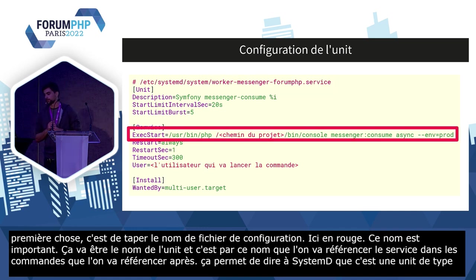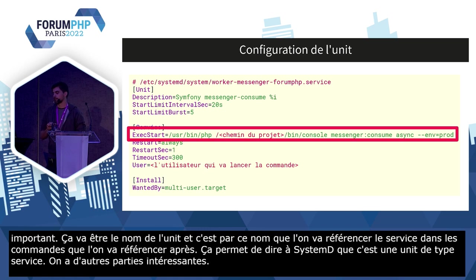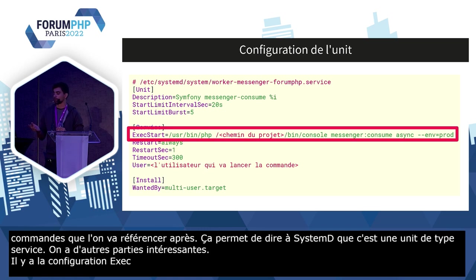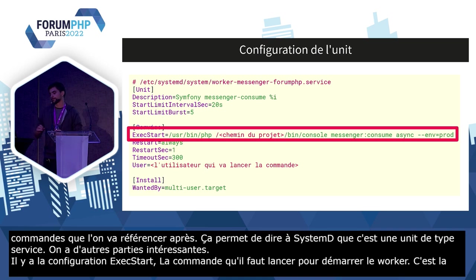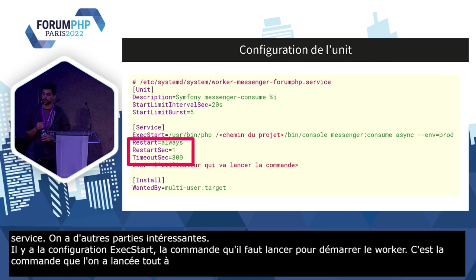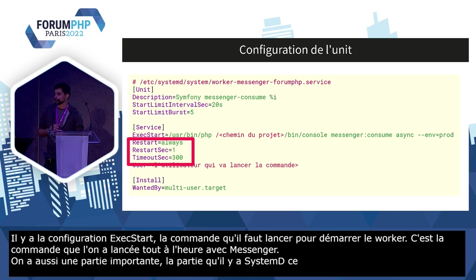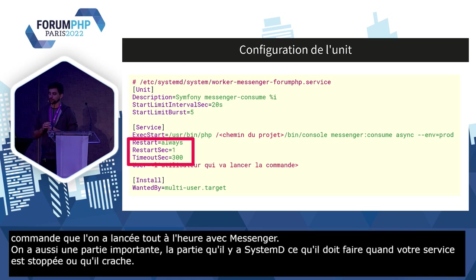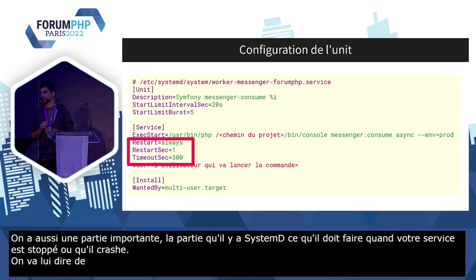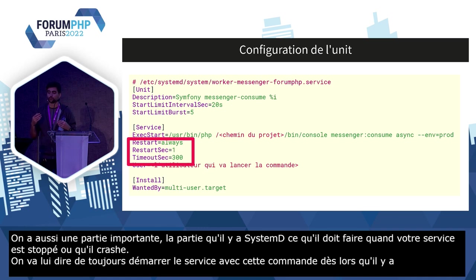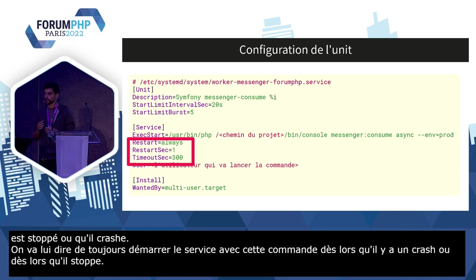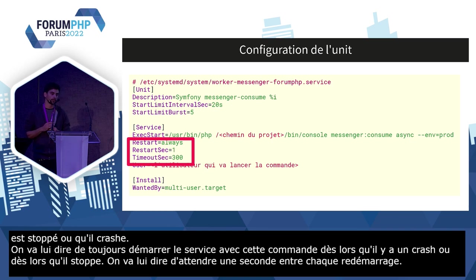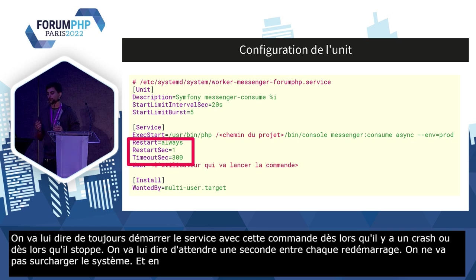On a d'autres parties intéressantes. La configuration ExecStart, c'est la commande que Systemd doit lancer pour démarrer notre worker : c'est simplement la commande messenger:consume qu'on lançait tout à l'heure. On a aussi une partie importante qui dit à Systemd ce qu'il doit faire quand le service est stoppé ou quand il crache. Avec Restart=always, on lui dit de toujours redémarrer le service dès lors qu'il y a un crash ou un stop. On lui dit d'attendre une seconde entre chaque redémarrage pour ne pas spammer le système.